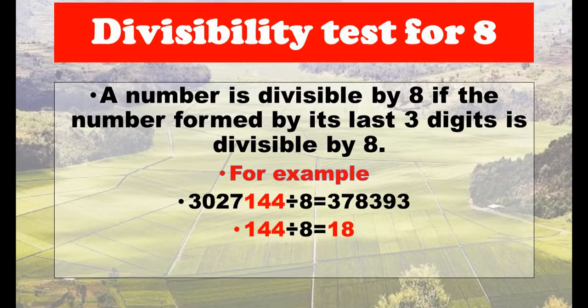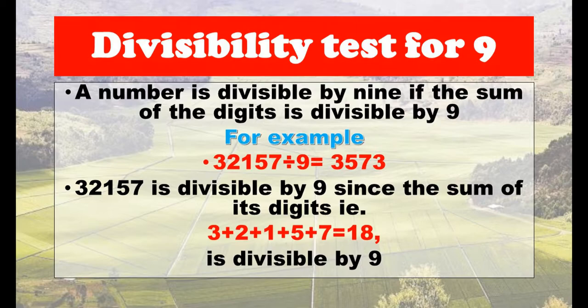Divisibility test for eight: a number is divisible by eight if the number formed by its last three digits is divisible by eight. For example, 3,027,144 divided by 8 equals 378,393. The last three digits are 144, and 144 divided by 8 equals 18, which shows that this number is divisible by eight.